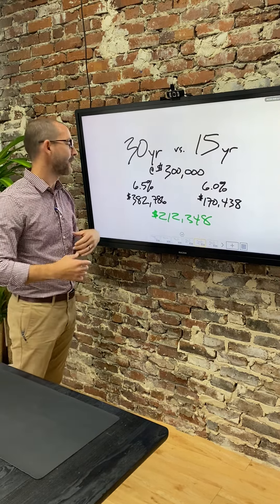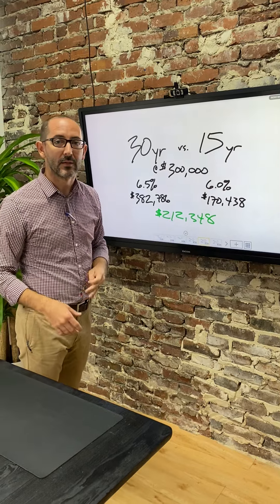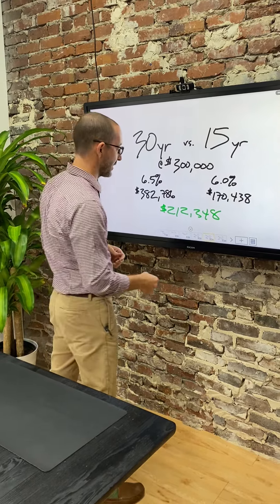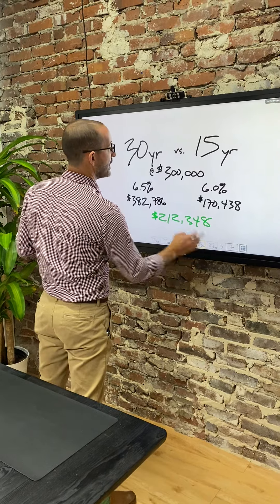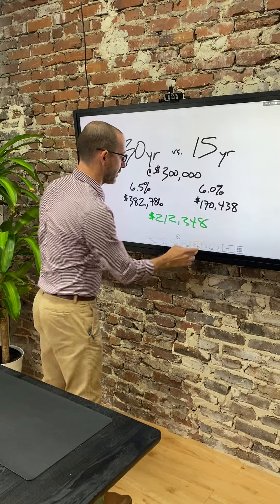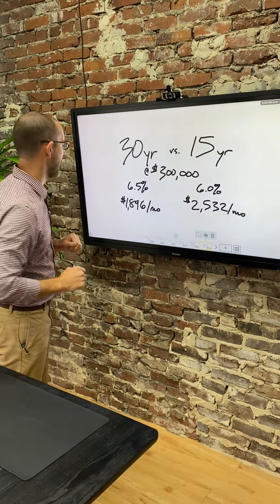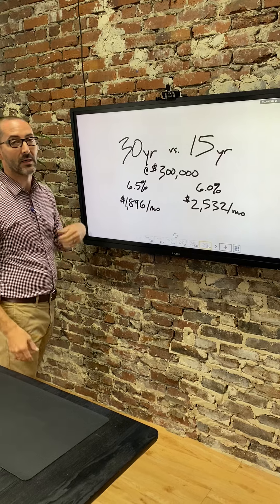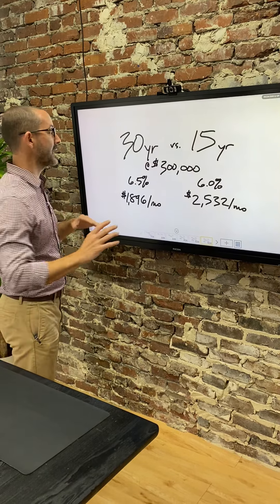Over 15 years that's like $14,000 a year. So you could like buy a Honda Civic every year with that much money. Now I know what you're thinking, don't 15-year mortgages cost more per month? Yes, they do. To the tune of, I don't know what is that, $650 bucks roughly. That's not chump change, I totally get it.